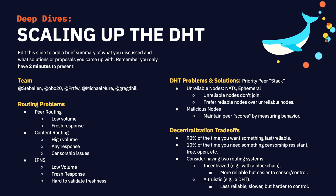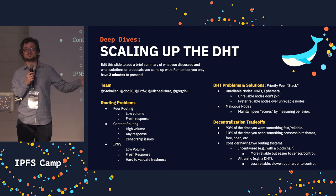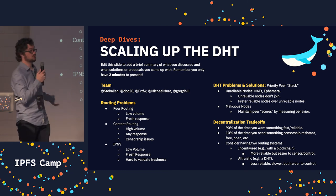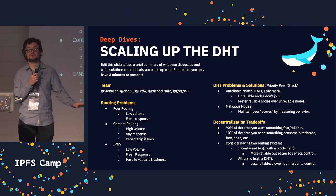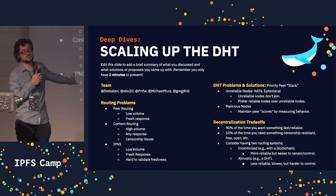These three routing problems have different characteristics and different requirements. Peer routing needs to be low latency and you need really fresh responses. Content routing is actually pretty high volume — you need to be able to put many records to the DHT saying where all of your content is. It doesn't care which response it gets, as long as you can eventually find the content, and it also cares about censorship resistance.